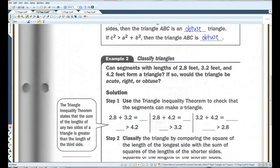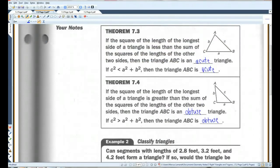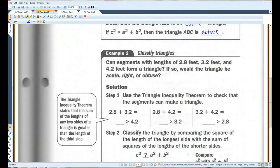Alright, let's do an example. Can segments with lengths of 2.8 feet, 3.2 feet, and 4.2 feet form a triangle? If so, will the triangle be acute, right, or obtuse? So we're going to use the triangle inequality theorem to check that the segments can make a triangle. If you add these together, you get 6. 6 is bigger than 4.2.